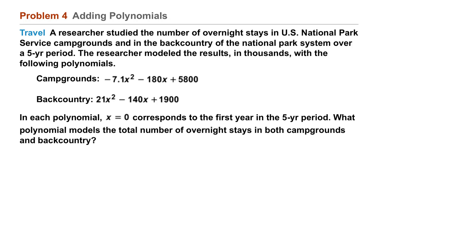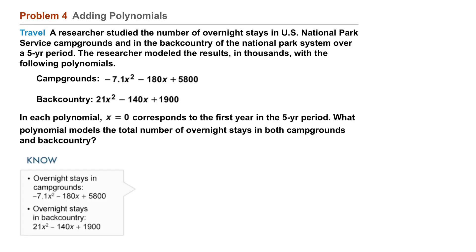In each polynomial, x equals 0 corresponds to the first year of the five-year period. What polynomial models the total number of overnight stays in both campgrounds and backcountry? Consider what you know.